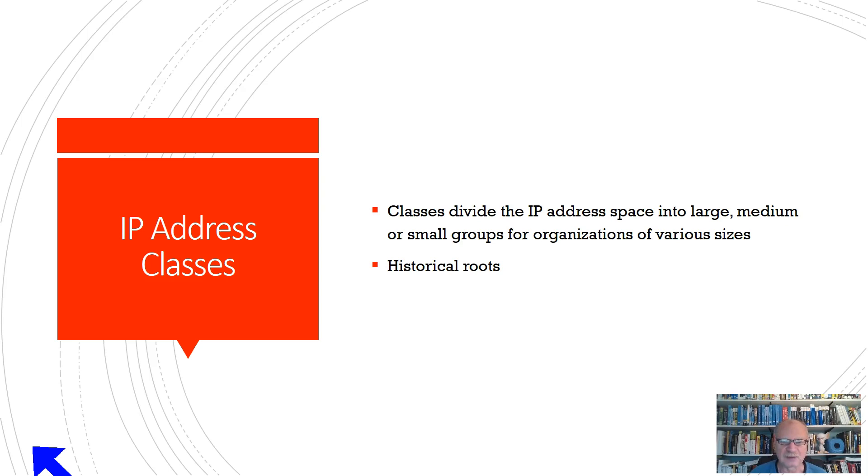Now remember at the time, computers were not something you just set on a desk somewhere. They were primarily mainframes, large computers. So there wouldn't be a lot of computers. So for example, if you gave a university a class C network, which only has 256 possible hosts, actually 254, but we'll get into that later, that would be plenty.